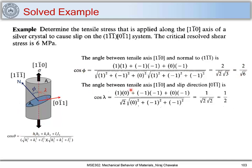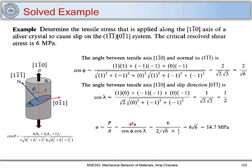Similarly, we find cos(lambda) — the angle between the tensile axis and the slip direction — and it comes out to be 1/2. We have been given tau_CRSS = 6 MPa, and we need to find the applied tensile stress sigma. From the Schmid's Law relation, sigma = tau_CRSS / (cos(phi) × cos(lambda)). Substituting tau = 6 MPa, cos(phi) = 2/√6, and cos(lambda) = 1/2, we get sigma = 14.7 MPa.